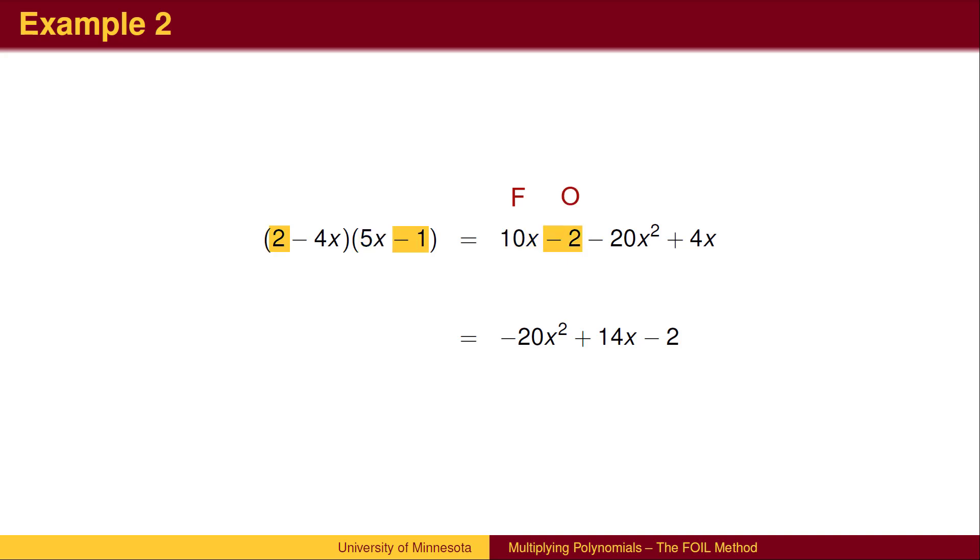Here is a second example. Be careful when multiplying two negative terms together. When we multiply negative 4x by negative 1, we are multiplying two negative quantities, which becomes positive in the product.